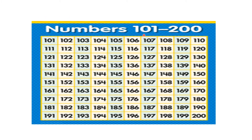Numbers 100 to 200. We all know that a 3-digit number starts from 100. After 100: 101, 102, 103, 104, 105, 106, 107, 108, 109. After 9, which number will you get? 10. So let us write the number after 109 as 110.